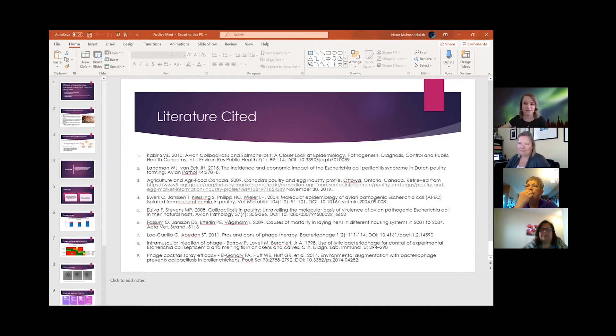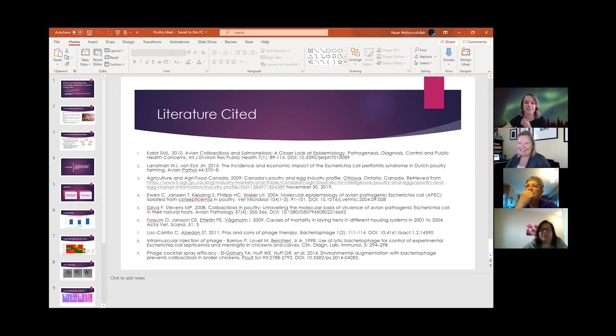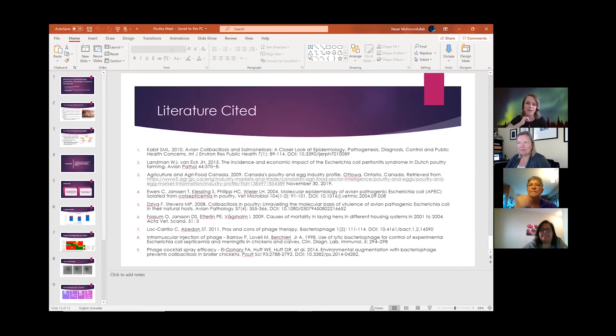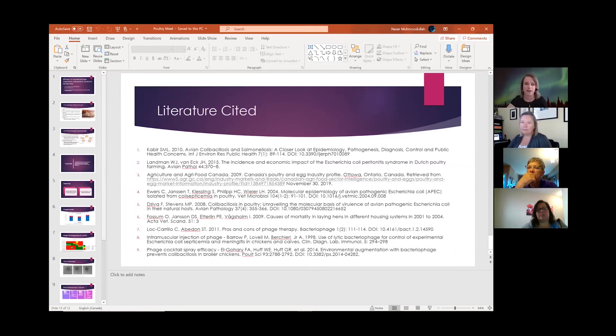So it depends on the inoculation route. I've noticed that for a lot of intramuscular injection strategies or ones where they're directly applied to the bird in some other really invasive way, it's about 10 to the 4 to 10 to the 6 plaque-forming units per mil, which is the infectious dose of a phage. But if you're doing something like a phage spray to the environment or including it in water, you want more along the lines of 10 to the 7 to 10 to the 9 plaque-forming units per mil.